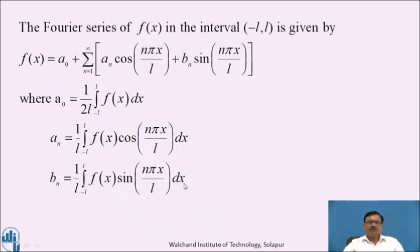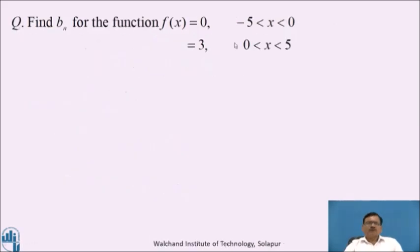Now these are the Euler's formulae to find the Fourier constants a₀, aₙ, bₙ. Now pause the video and find bₙ for the function f(x) = 0 when -5 < x < 0, and equal to 3 when 0 < x < 5.